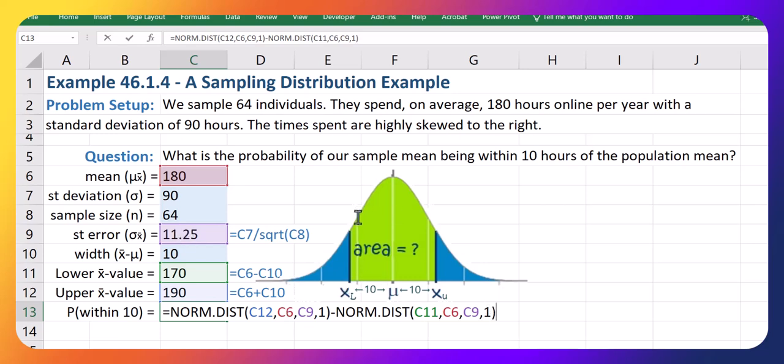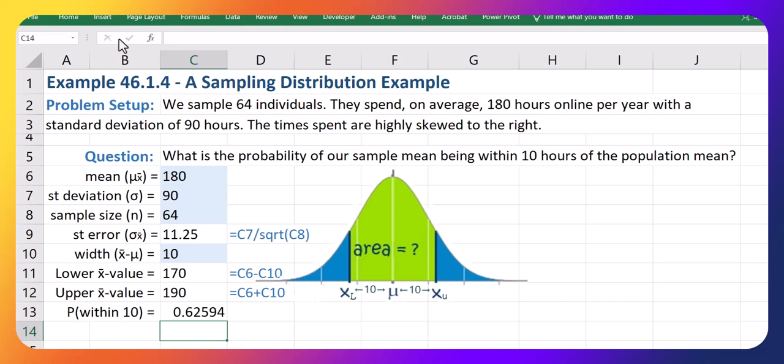So if we want the area on a bell curve between two x values, just subtract NORM.DIST of either of them. What that actually does is takes the area all the way up to the upper limit and subtracts off the area below the lower limit, leaving us with this middle area. And let's see what that gives us.